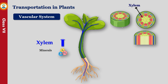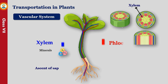This process is called ascent of sap. The ascent of sap takes place due to the suction caused by transpiration. Xylem forms an extensive network throughout the plant. Similarly, phloem forms long tubes for transportation of food from leaves to the other parts of the plant by a process called translocation. Phloem tubes are also called sieve tubes.